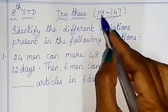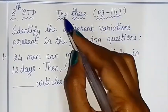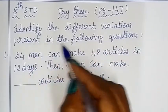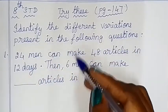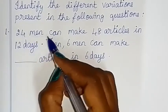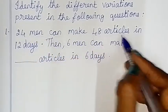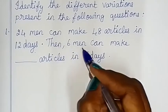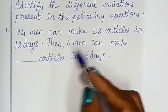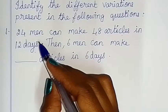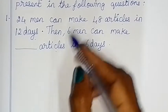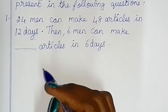Hello children. I am going to try page number 147. Identify the different variations present in the following question. 1st sum: 24 men can make 48 articles in 12 days. Then 6 men can make dash articles in 6 days. Now fill in the blanks. I will explain to you the answer.